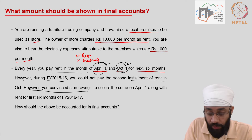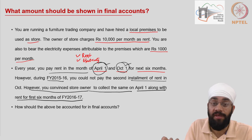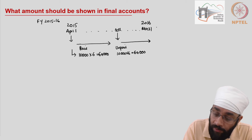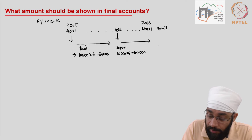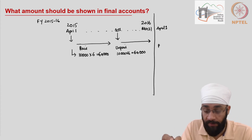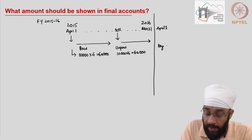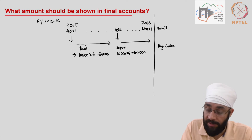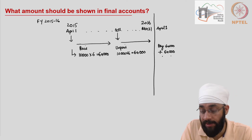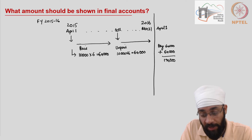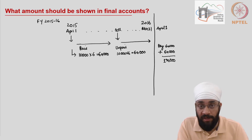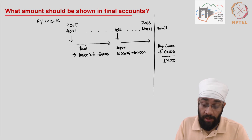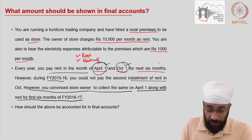However, you convince the store owner to collect the same on April 1st, along with the rent of the first six months of the next financial year. So when you begin April 1st next year, you will pay this rent — 60,000 for the previous six months — plus rent for the next six months. So in the next year you will pay 120,000, which will take care of half of this year and half of the upcoming year.